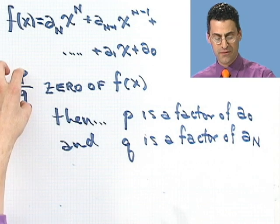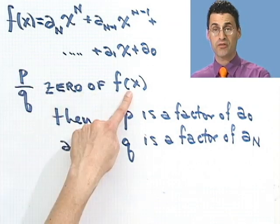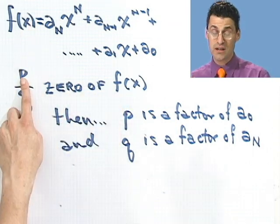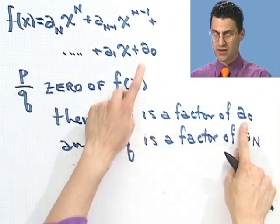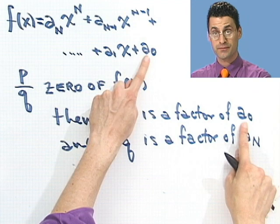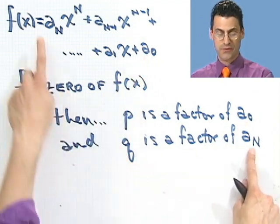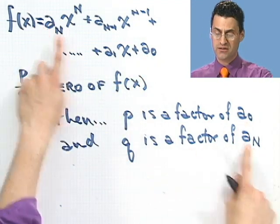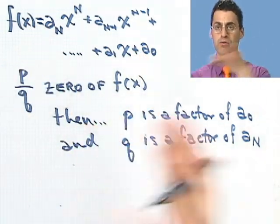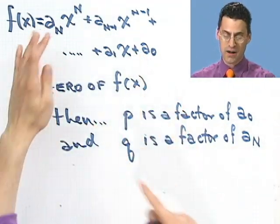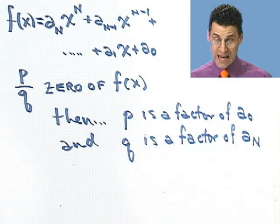And if you're going to have a rational number that's a zero of the polynomial, so you plug that in and you get 0, if you're going to have that, then it must be the case that p is a factor of that last term, some factor, and q will be some factor of the first term. So all you got to do is look at all the factors of the last term, all the factors of the first term, look at all the possible quotients you can make, top over bottom, and you have a list of all the possible candidates.